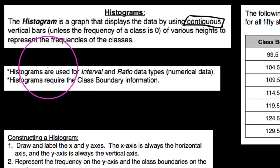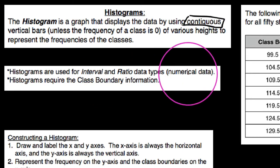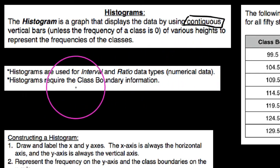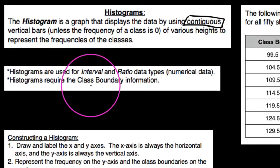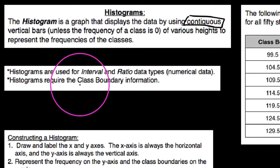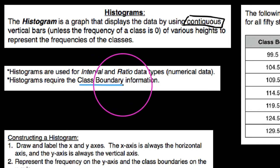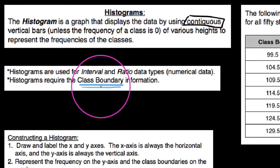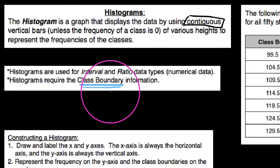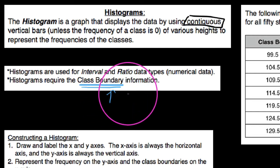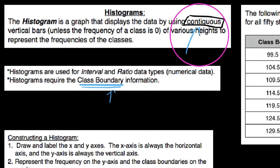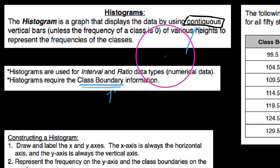We know a few things about histograms. They're used for interval and ratio data types, so we're talking about things that are numerical. They also require boundary information. We have class limits and class boundaries for each class, and what we require here are the boundaries, so that our classes are contiguous with one another when we draw the graph.